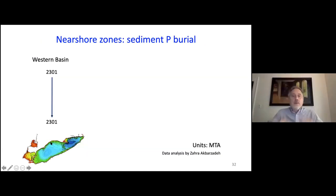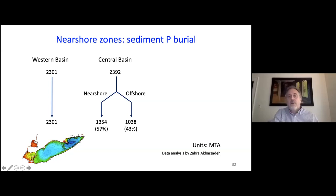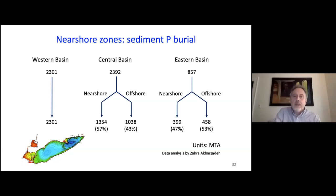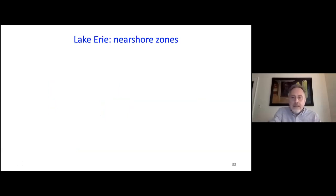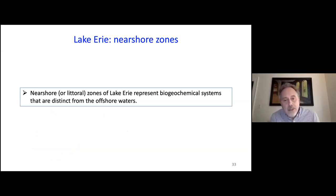Looking at sediment phosphorus burial for the western basin — essentially one big nearshore system — and for the central basin: of all the phosphorus buried in the central basin, the majority — 57% — ends up in the nearshore zone. Since the nearshore is much smaller than the offshore, if you normalize by surface area, burial rates of phosphorus are much larger in the nearshore zone than in the offshore zone. We find the same for the eastern basin. This all points to the nearshore littoral zones of Lake Erie — and by extrapolation other large lakes — representing separate biogeochemical systems distinct from the offshore, and we need to treat them as their own systems.